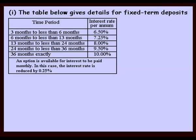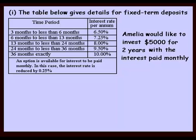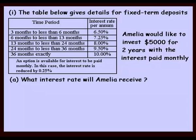The table below gives details for fixed term deposits. Amelia would like to invest $5,000 for two years with the interest paid monthly. We're firstly asked, what interest rate will Amelia receive? Well, for two years — that is 24 months — it says for 24 months to less than 36 months, we're going to get a 9.5% interest rate.